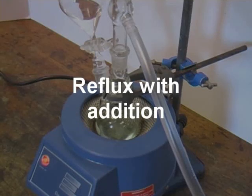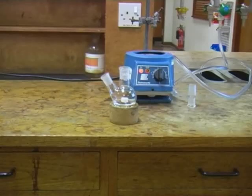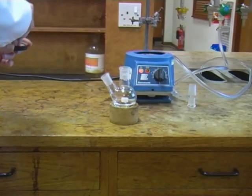Before carrying out a reflux with addition, we need to place our reagent solution into a round bottom flask with two necks. An alternative would be to use a one neck flask with a Kleisen adapter.